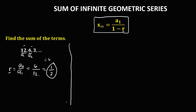To find the sum of this infinite geometric series, we have a sub 1, and a sub 1 is 12, then over 1 minus r, so the common ratio is positive 1/2. Then simplify: we have 12 over 1 minus 1/2, and 1 minus 1/2 is positive 1/2.